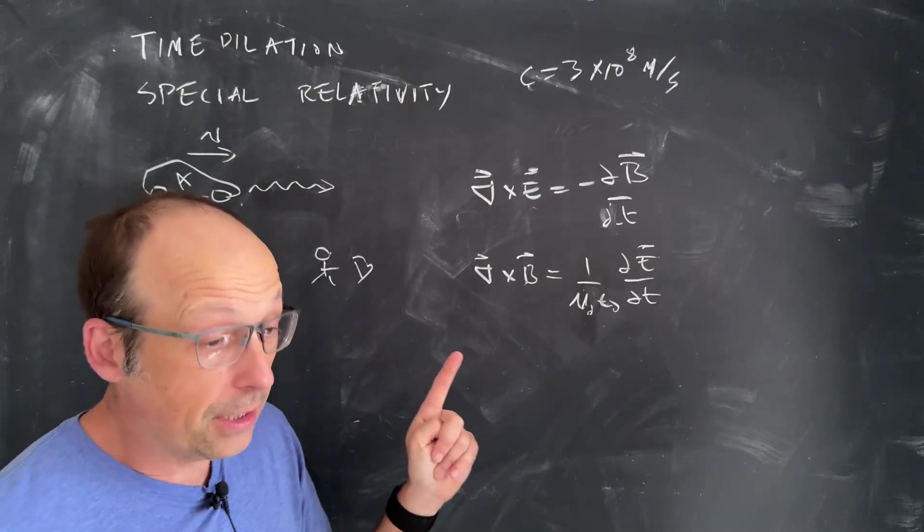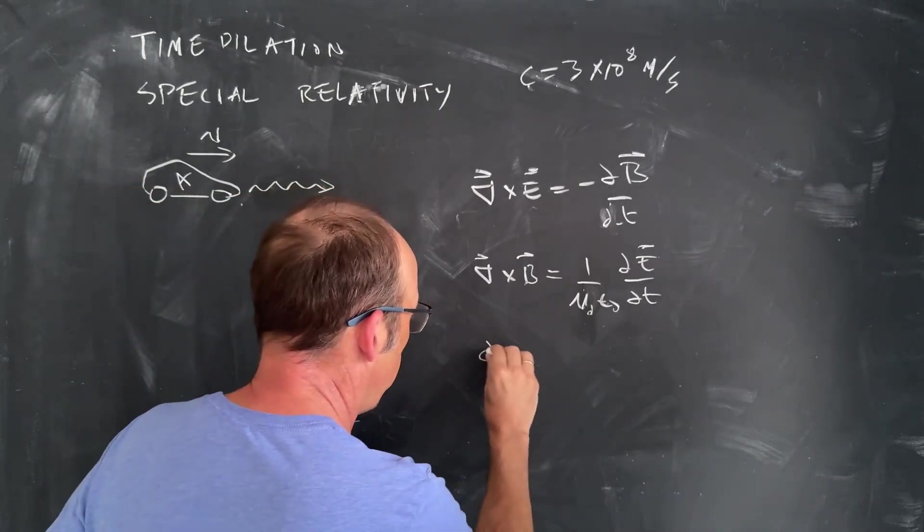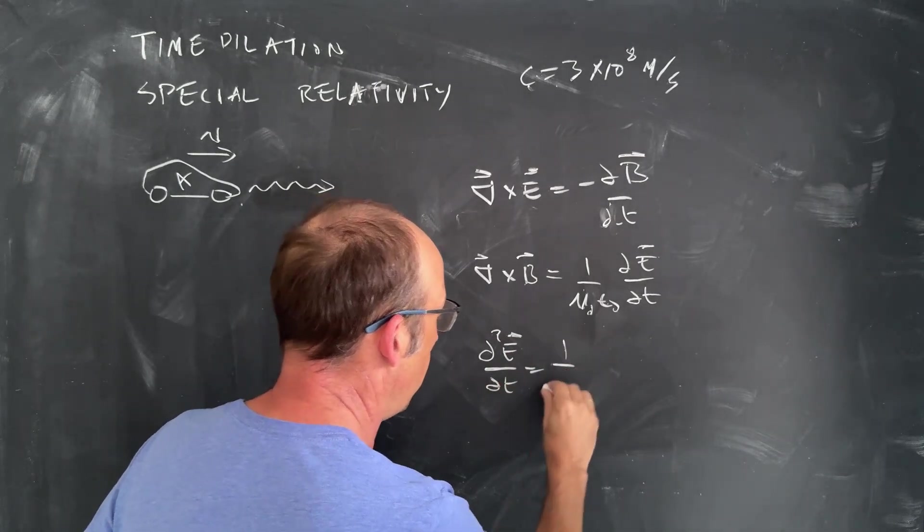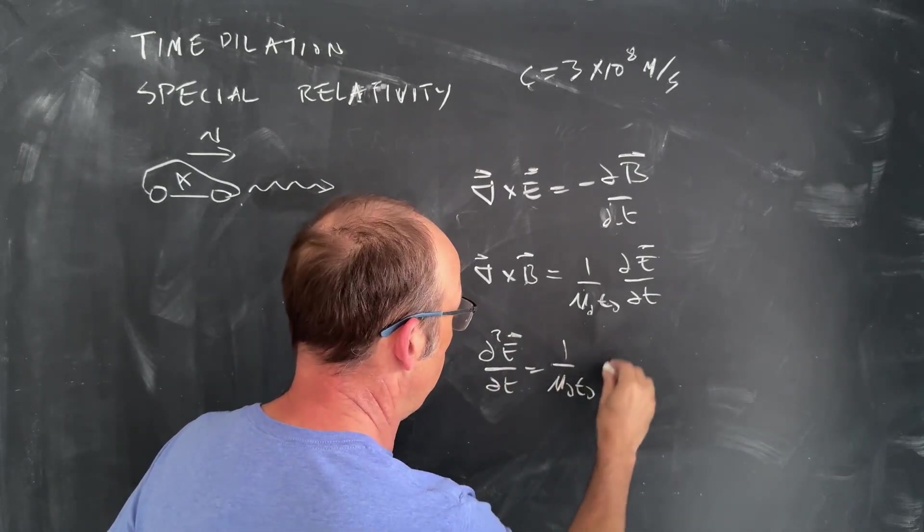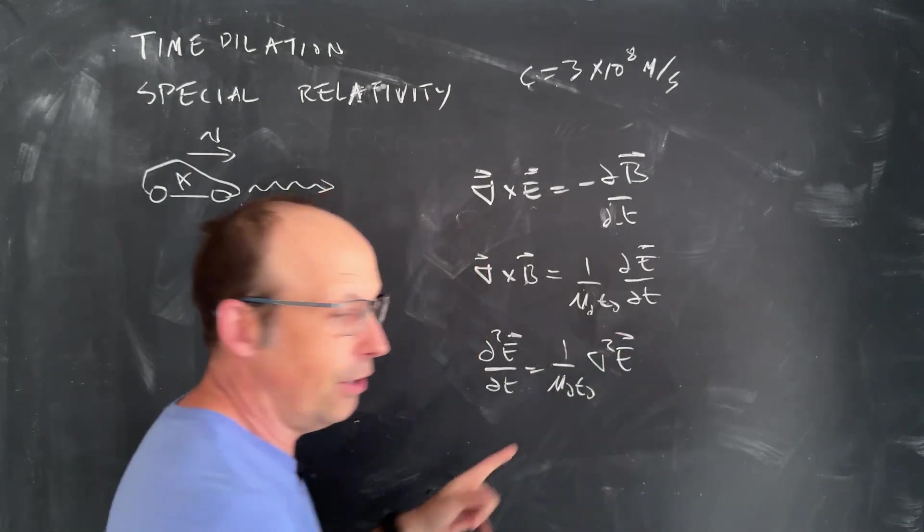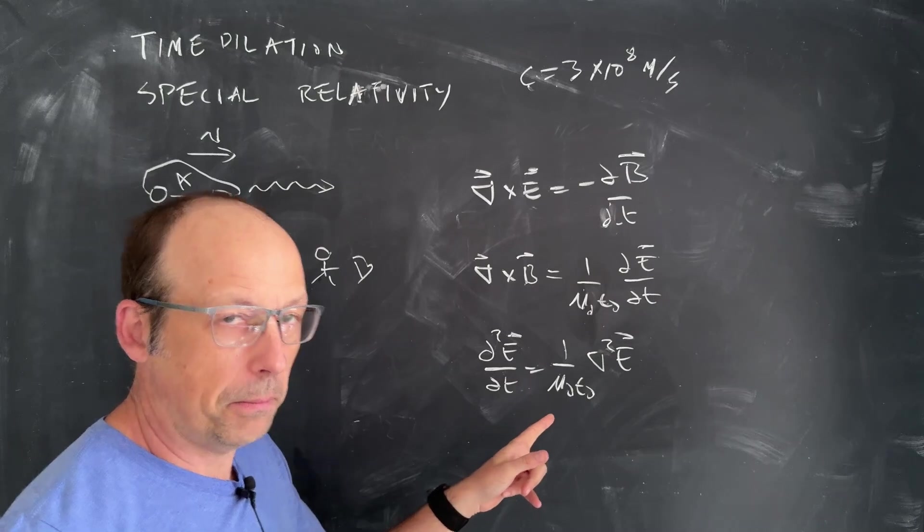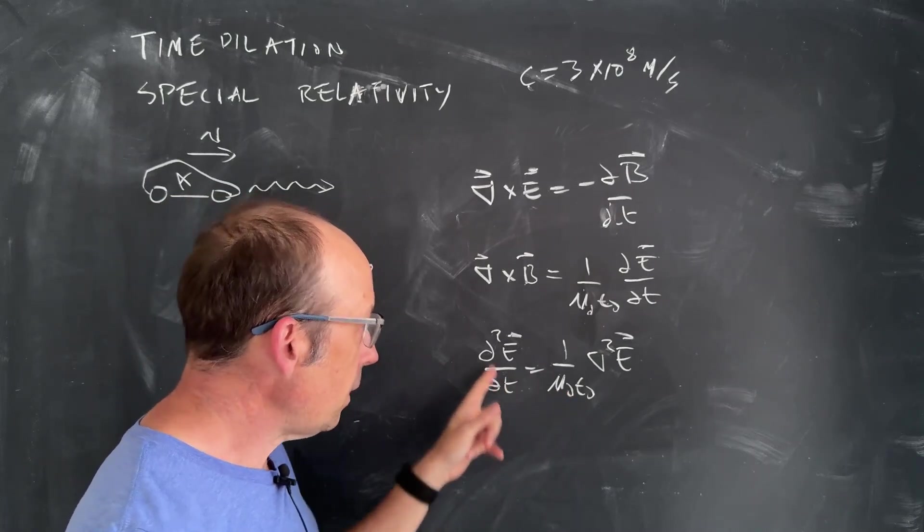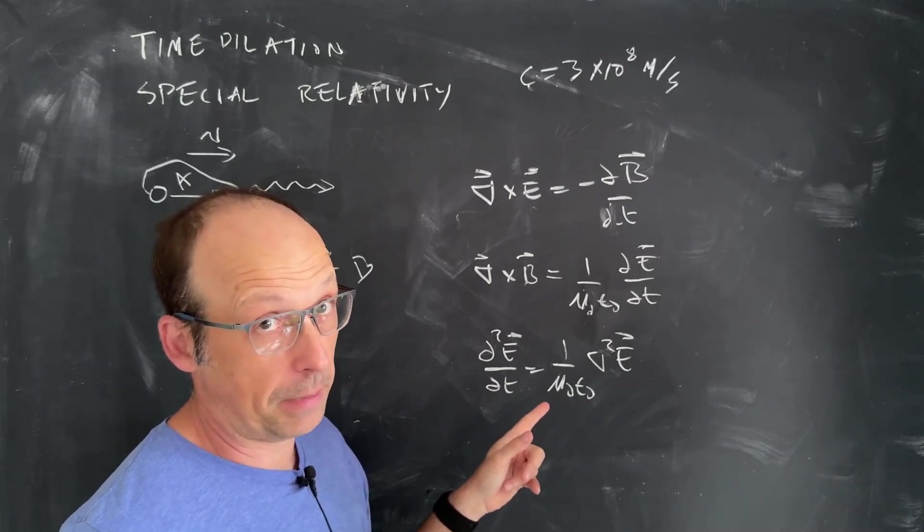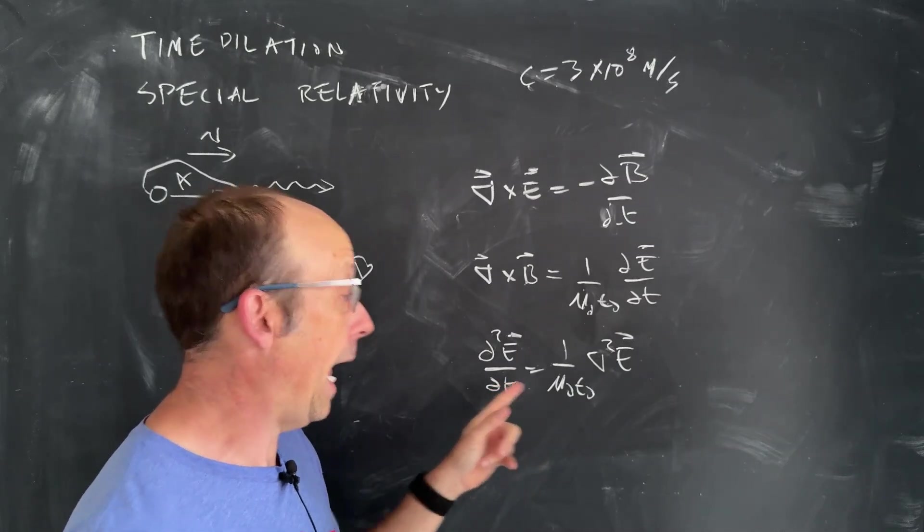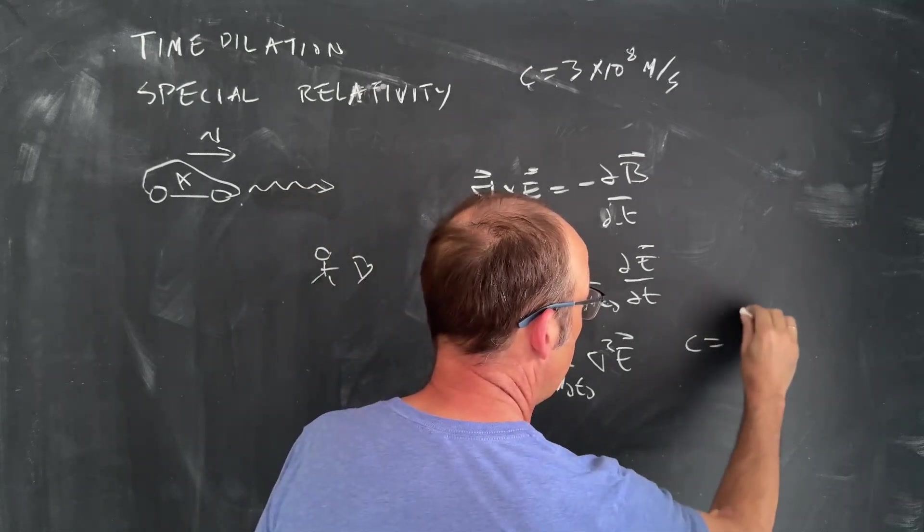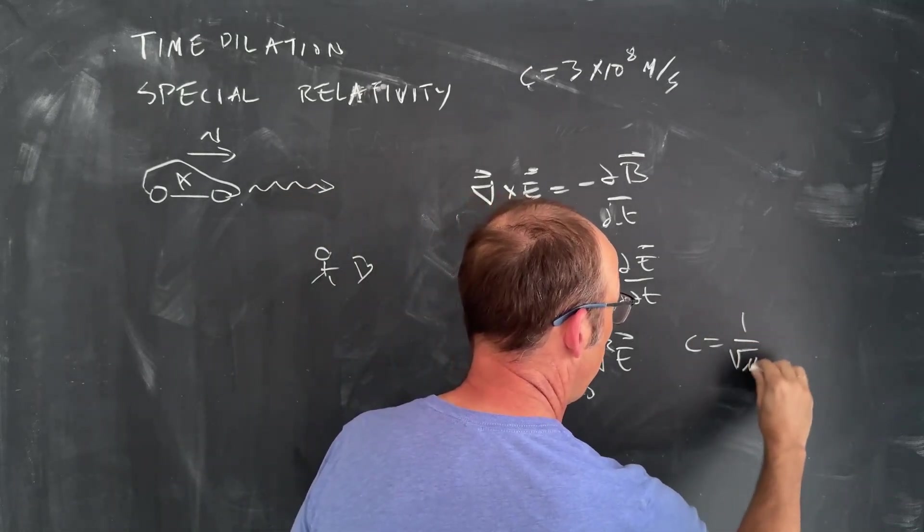From that, you can do a little magic and you get the following. The second partial of E with respect to T is one over mu naught epsilon naught del squared E. The point is, Maxwell's equations say that we should get a wave from an electromagnetic field. And the speed of that wave would be C is one over the square root of mu naught epsilon naught. Maxwell's equations say that.